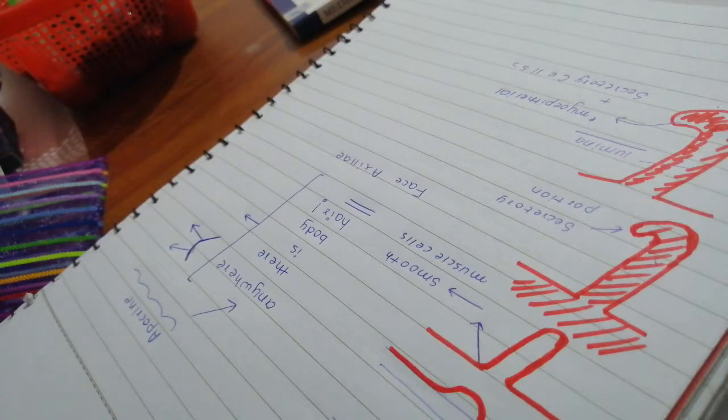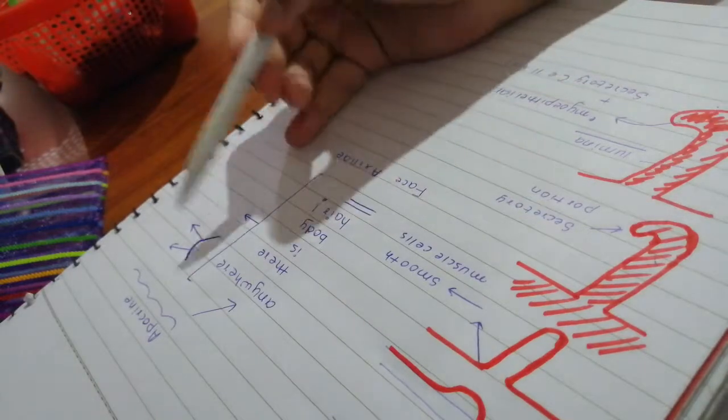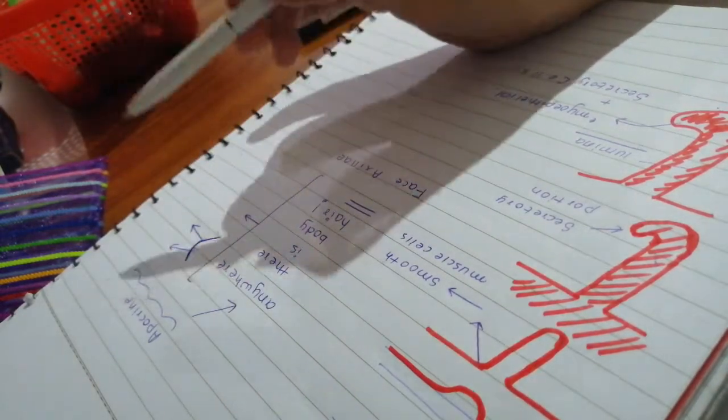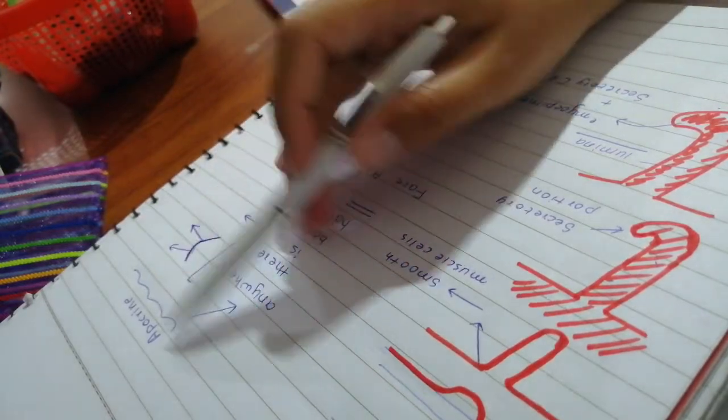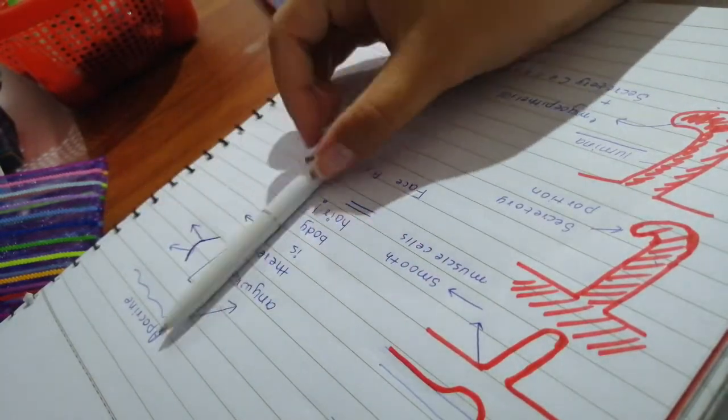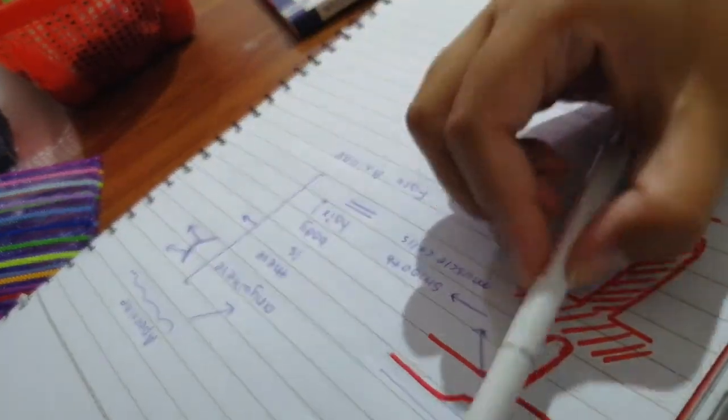These sweat glands open into hair follicles instead of the skin—that does make sense. This is a very important concept. They will and can ask you: where do the apocrine sweat glands open up? How do they differ from their ecrine counterparts?